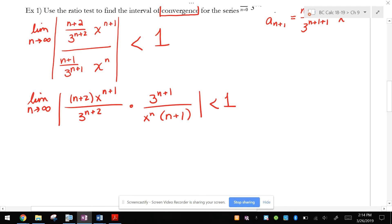And now I get to cancel. I love canceling. So here's x to the n. Here's x to the n plus 1. So these cancel and just leave an x to the first behind. Here's 3 to the n plus 1. Here's 3 to the n plus 2. So I can cancel this and really just leave 3 behind.